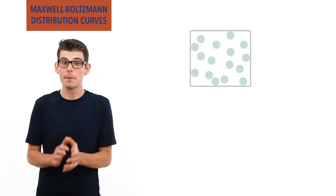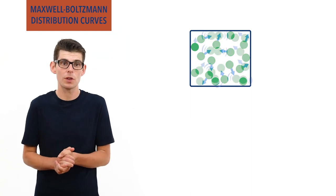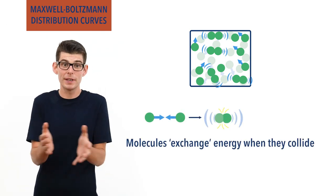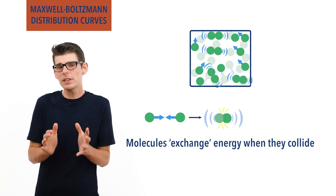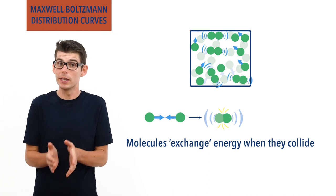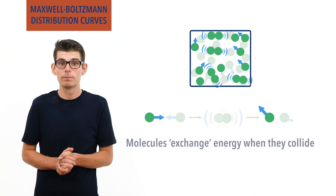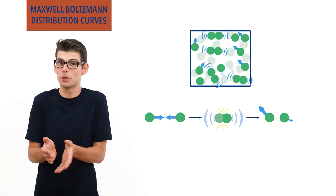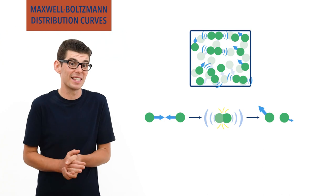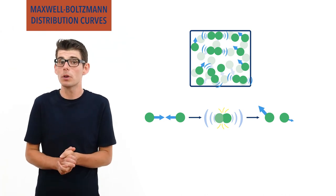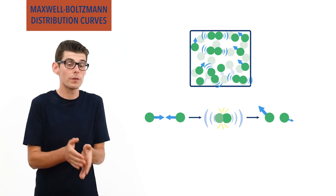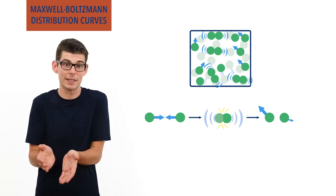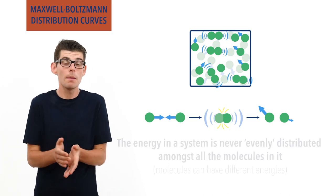In a container full of gas, molecules are moving around and constantly bumping into each other and colliding. When these collisions happen, the molecules exchange energy, effectively swapping energy between themselves. This means every time one molecule collides with another, it may lose a little bit or gain a little bit of energy. The combined energy of both molecules will be the same as before the collision — no extra energy is created or lost. It's just redistributed between the molecules as they collide. As a result, two colliding molecules can end up having different energies to each other after they collide.